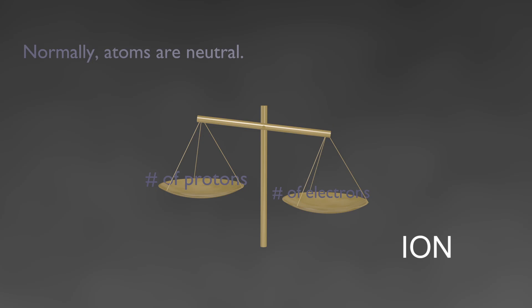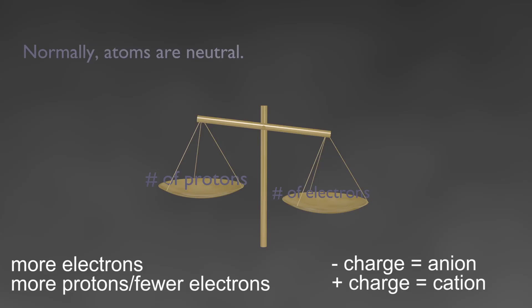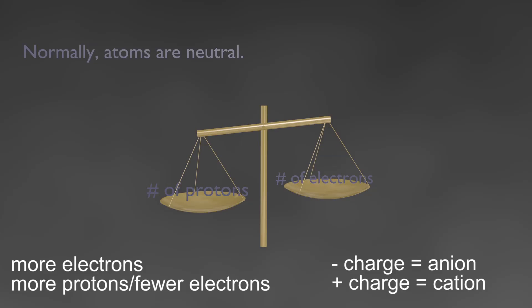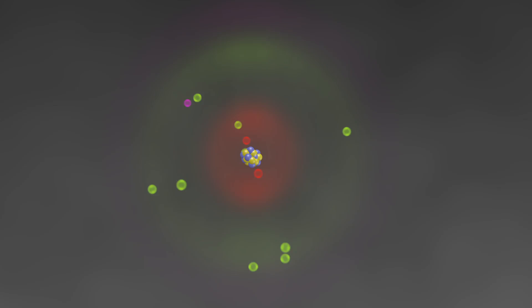If we have more electrons, then it's a negative ion. If we have fewer electrons, then it's a positive ion. So let's take a look at the sodium atom. Here we can see the nucleus and electrons floating around in their respective energy levels, their different shells.